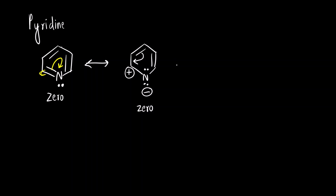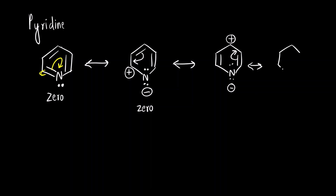Next, the pi electrons will move here. Again, draw the resonance arrow. A positive charge appears here, and nitrogen has two lone pairs. The pi bond has shifted. Next, the pi bond will shift again with the resonance arrow. Nitrogen still has two lone pairs, the negative charge is here, and the pi bonds have shifted, with a positive charge on the adjacent carbon.